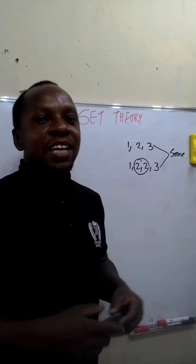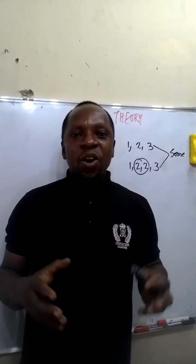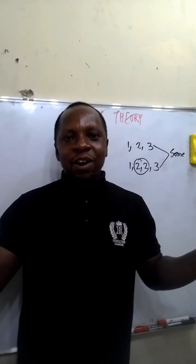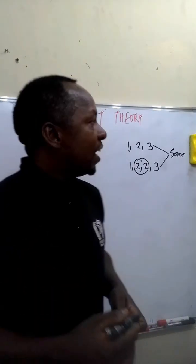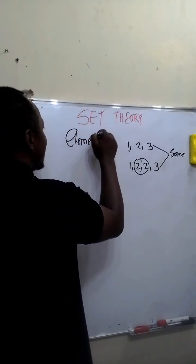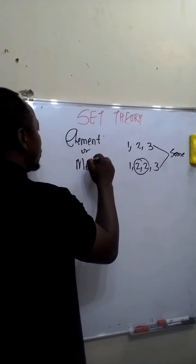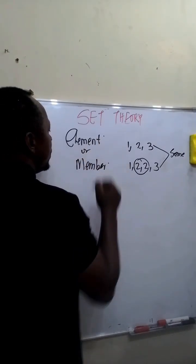As I said earlier, a set is simply a collection of distinct objects. Now, these objects that are collected together are called elements. In sets, these objects collected are called elements, or they are called members.